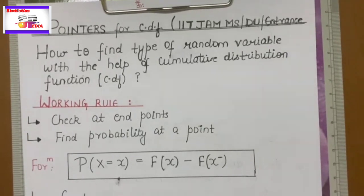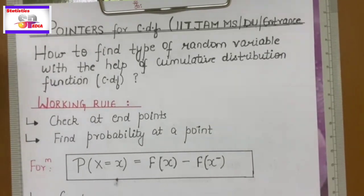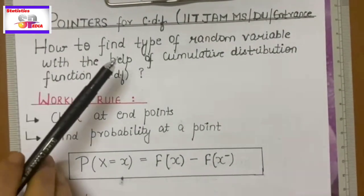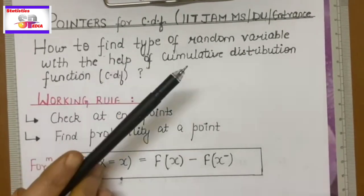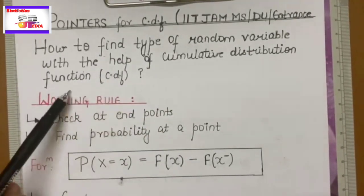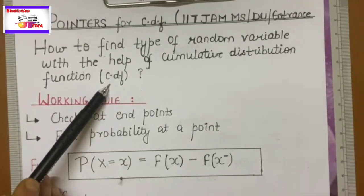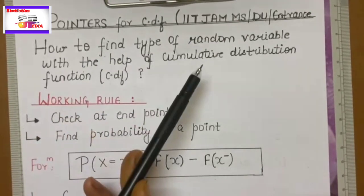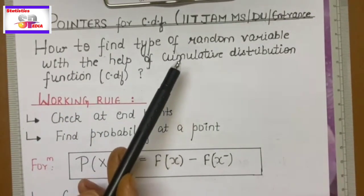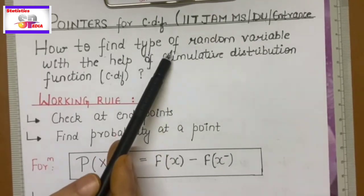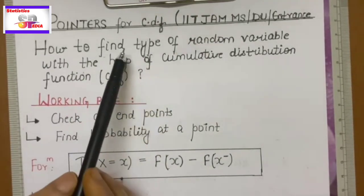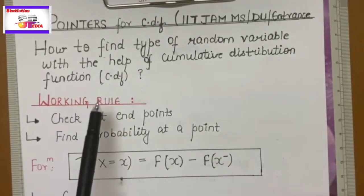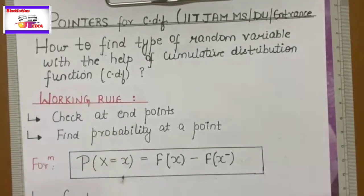How do you apply the concept of CDF in order to solve questions? Now the working rule: how to find the type of a random variable with the help of the CDF. If you have a CDF or distribution function given, then how do you determine the nature of the random variable? A random variable is of two types — discrete and continuous. So first of all, in any competitive exam or any other exam, when a CDF is given, what should be our first step or working rule? This is what we are discussing today.